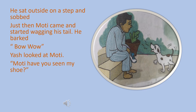He sat outside on a step and sobbed. 'Sobbed' means to cry noisily. Just then, Moti came and started wagging his tail and barked. 'Wagging' means moving from side to side.